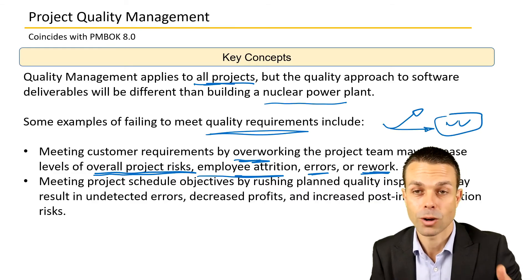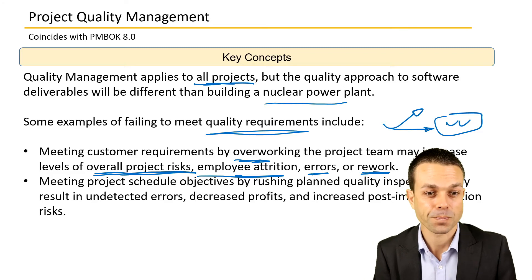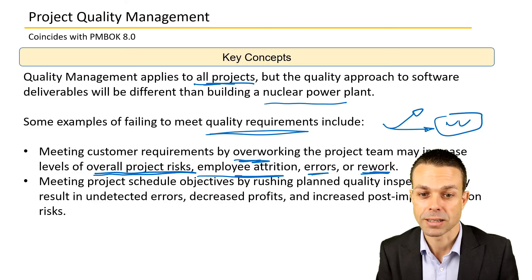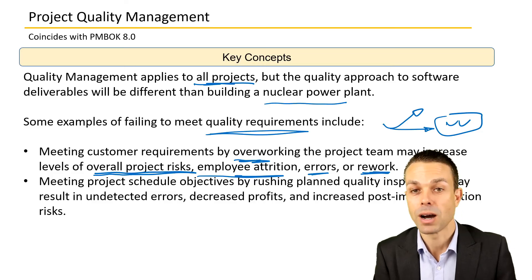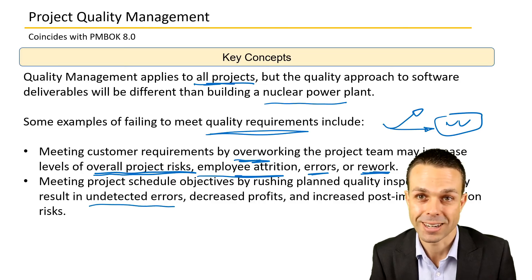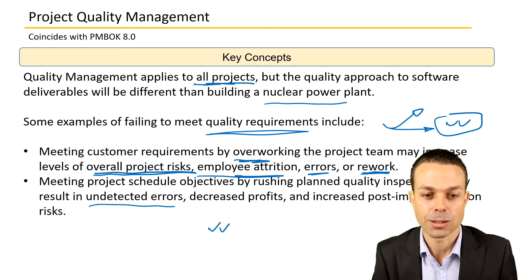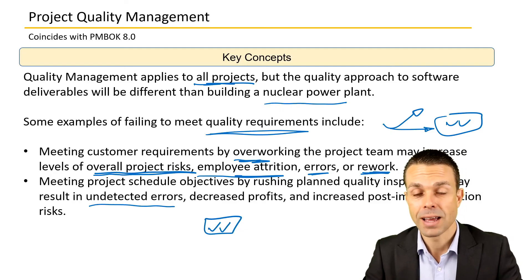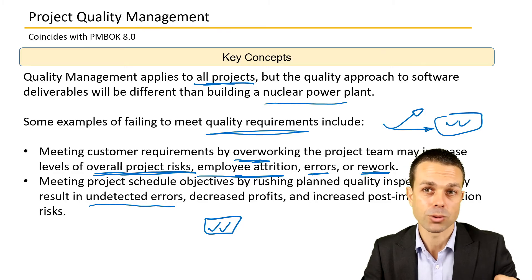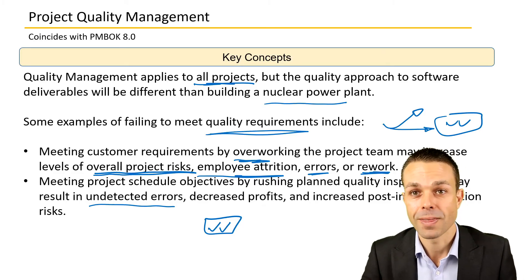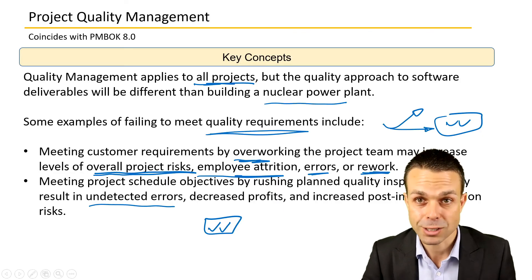Meeting project schedule objectives by rushing planned quality inspections might result in undetected errors. Don't skimp on the quality management process. Make sure you are testing properly — at the very least, do a risk-based approach, testing those high-risk items, and go through to make sure the entire deliverable is fit for purpose. That's going to give you the best outcome from the customer's point of view.